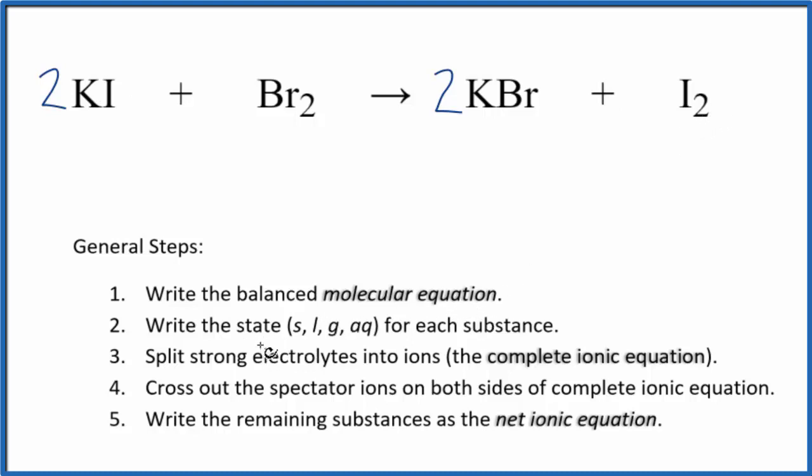Now we need to write the state for each substance. KI, potassium's compounds are very soluble. Put an aq, that'll dissolve, dissociate into its ions. Br2, that's bromine gas. You should recognize that as a gas.